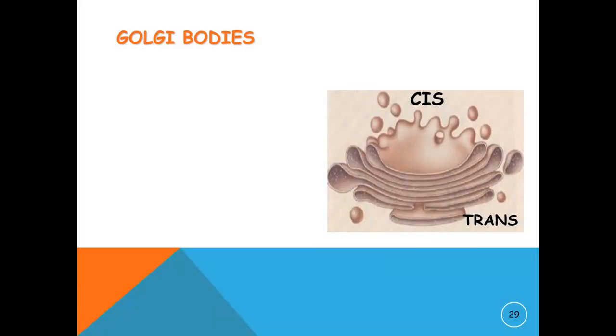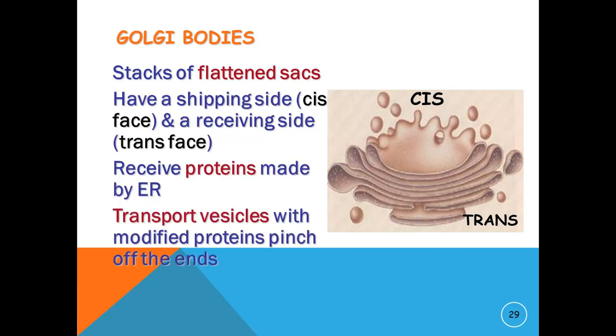A Golgi apparatus, or Golgi body, also known as Golgi complex, is a cell organelle that helps process and package proteins and lipid molecules, especially proteins destined to be exported from the cell. Named after its discoverer Camillo Golgi, the Golgi body has a series of stacked membranes. In this way, materials are transported from rough ER to Golgi to the cell membrane by vesicles.